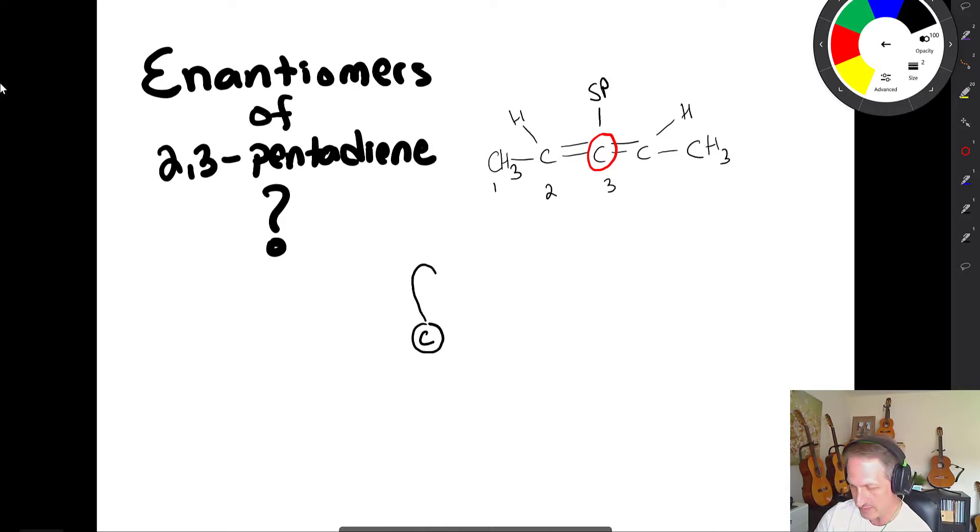So sp means that we have a p orbital pointing up and down, and then another p orbital kind of going back here and coming out facing forward, so kind of like a wedge and dash, in and out of the plane of the page. Now that carbon's connected to a neighboring carbon over here, and we're connected over here to another carbon atom. So it kind of looks crudely something like this.